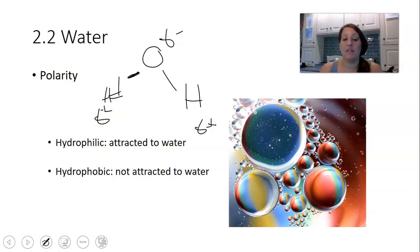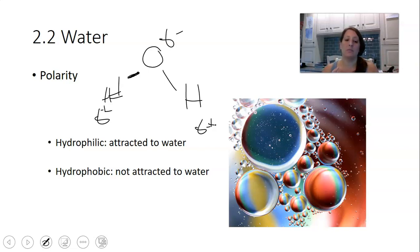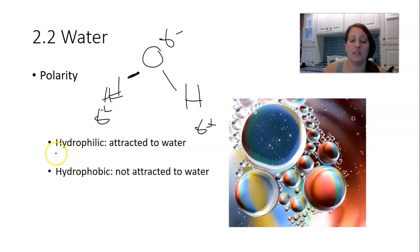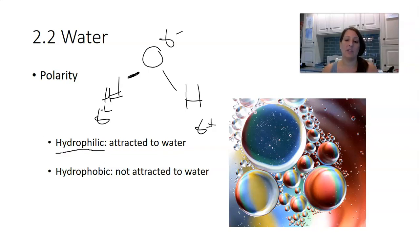We say that a molecule of water has polarity — it has regions or poles that have different partial charge. That means that other molecules that are polar, or completely charged positive or negative, are going to be attracted to water. Any atom, ion, or molecule that is attracted to water is called hydrophilic — hydro meaning water, and philic meaning liking or loving.